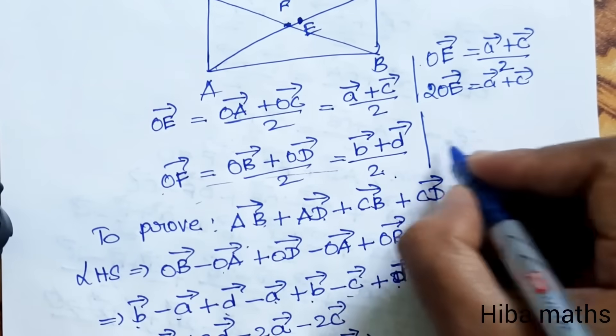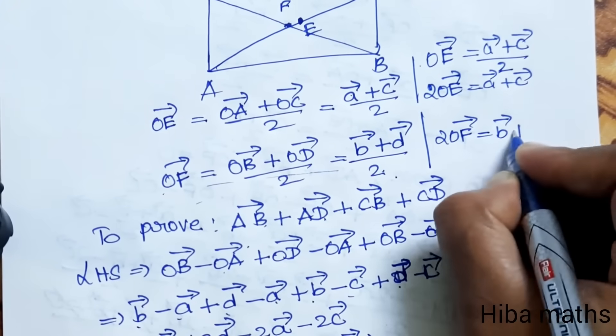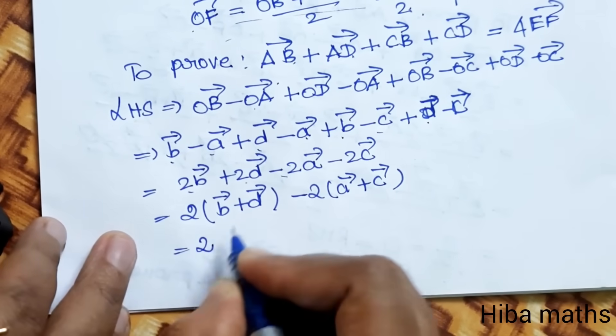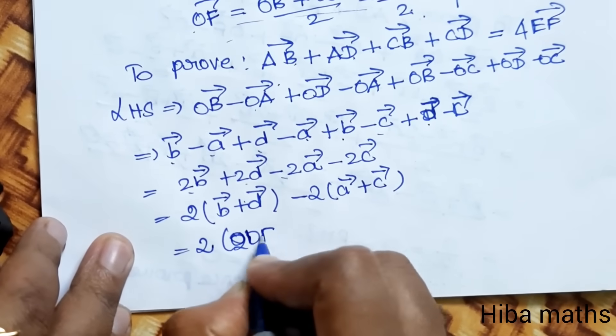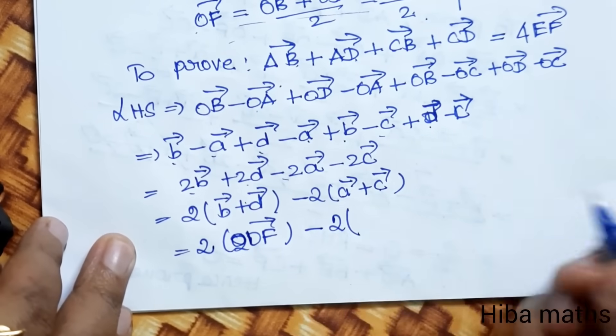So 2 times OE vector equals A vector plus C vector. Similarly, 2 times OF vector equals B vector plus D vector.